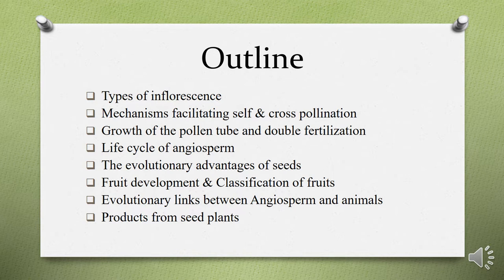This lecture covers the types of inflorescence, mechanisms that facilitate self and cross pollination, growth of the pollen tube and double fertilization, the life cycle of angiosperms, evolutionary advantages of seeds, fruit development and classification of fruits, and the evolutionary links between angiosperms and animals, as well as products developed from seed plants.